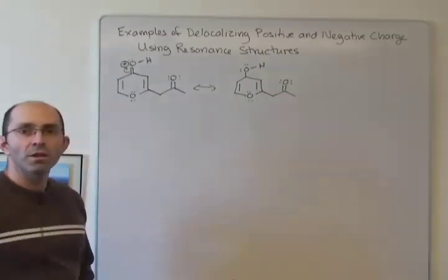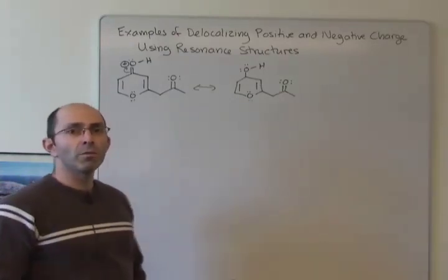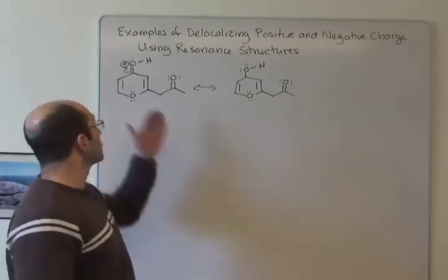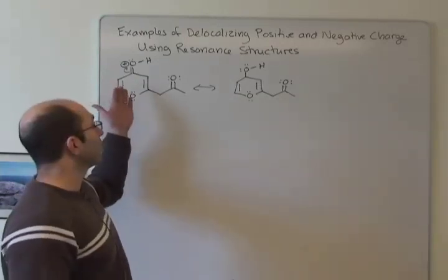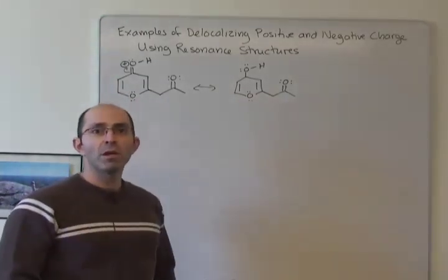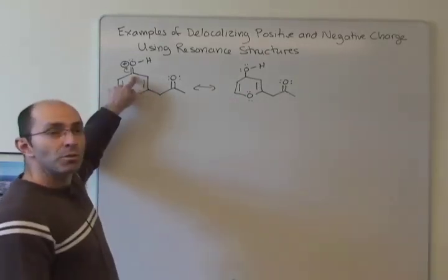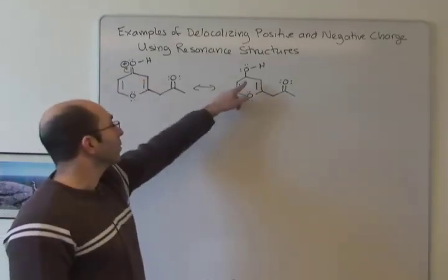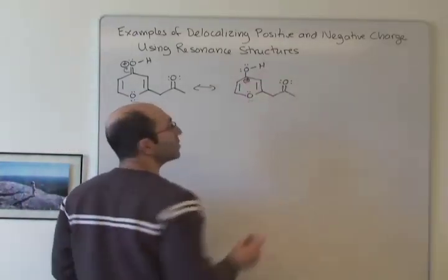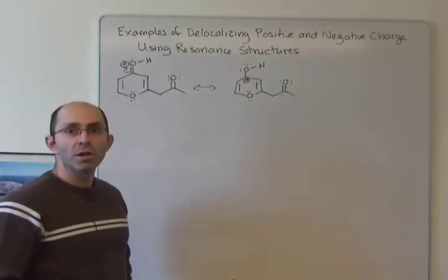We've given the oxygen another lone pair, and if we're keeping track of where the formal charge goes — because if we start with something with a positive formal charge, all of our resonance structures will have to be plus one in formal charge — this carbon had four bonds to it. Now it only has three bonds to it, so that carbon is positively charged. That's where the positive charge ends up.